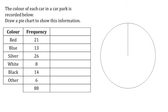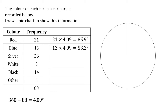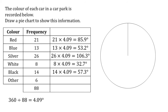So each car is going to be 360 degrees divided by 88, which is 4.09 to two decimal places. If each car is 4.09 degrees: red has 21 cars, so 21 times 4.09 equals 85.9 degrees. I've rounded to one decimal place because we can't get any more accurate than that with a protractor. Blue is 13 times 4.09, which is 53.2 degrees. Silver is 106.3, white is 32.7, black is 57.3, and other is 24.5 degrees.